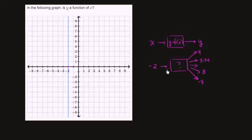So since it does not map to exactly one output of this function, in the following graph, y is not a function of x.